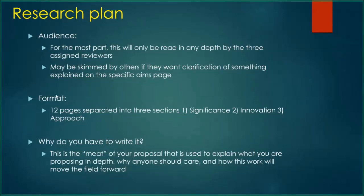Your three assigned reviewers — a primary and secondary reviewer — are the closest you'll get to subject matter experts. However, the third reviewer is going to be a knowledgeable, well-regarded scientist, but unlikely to be a field-specific expert in your area. So your audience for the research plan is both people in the broad area but not your exact area, as well as direct subject matter experts. The format and length highly depend on what you're applying for: if you're applying for an R01, it's 12 pages separated into three sections — significance, innovation, and approach.